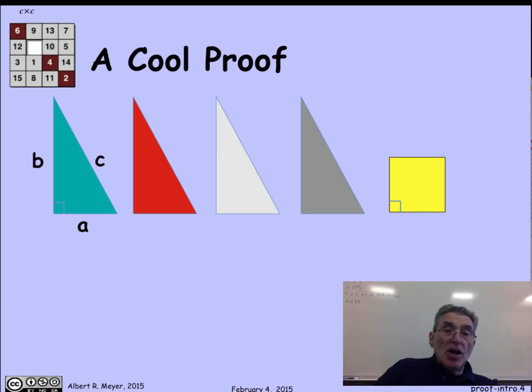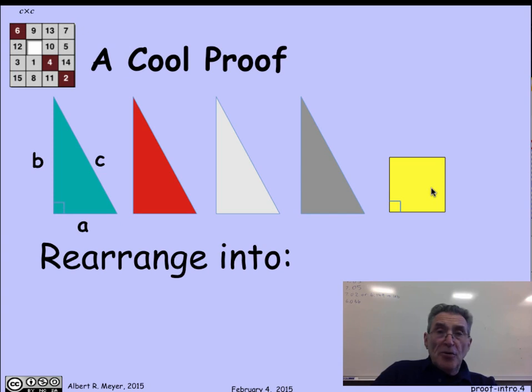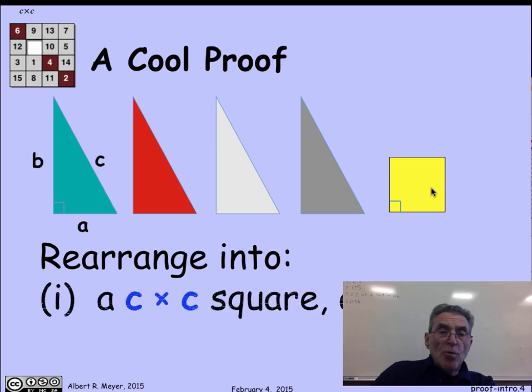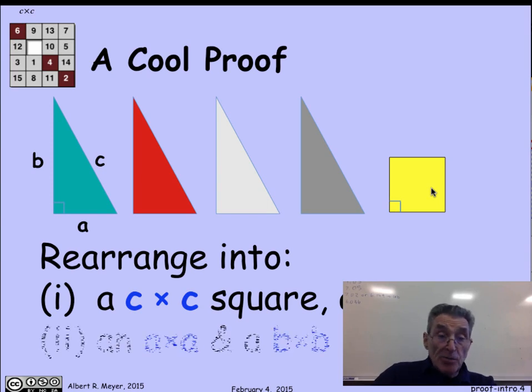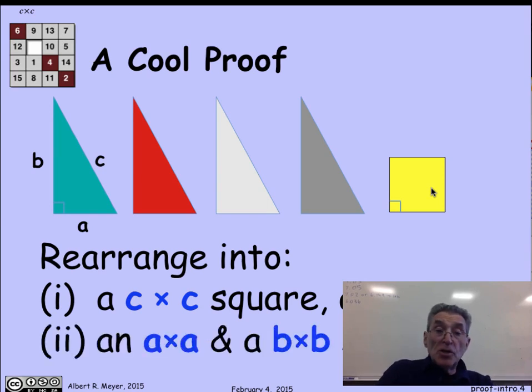There are four triangles that are all the same size, four copies of this ABC triangle, which we've put in different colors to distinguish them, and a square, which for the moment is of unknown size. And the proof of the Pythagorean theorem is going to consist of taking these four shapes and reassembling them so that they form a c by c square first, and then finding a second arrangement so that they form two squares, an a by a square and a b by b square.